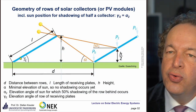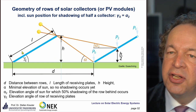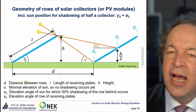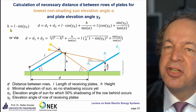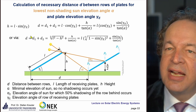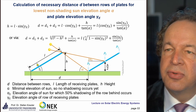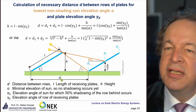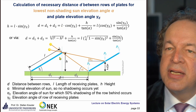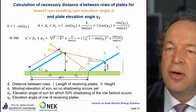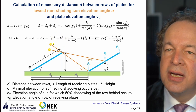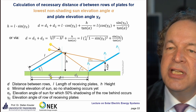Looking at the geometry of two rows in cross-section: the first row has an elevation angle gamma_e and a height h, the module length is l, and the distance between rows is d, split into d1 and d2. The height h is defined as l times sine of gamma_e. d1 equals l times cosine of gamma_e, or equivalently, d1 equals the square root of l² minus h².